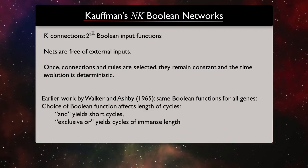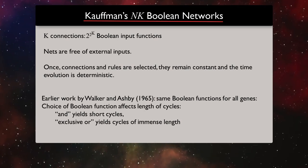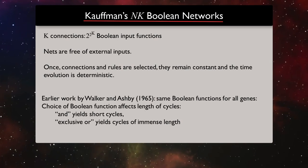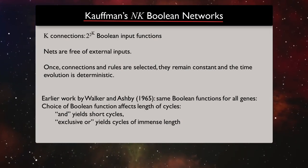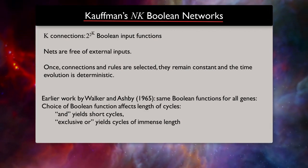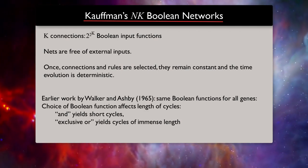If we use a boolean network as the model of organisms, then we can have a different network for every organism. And we can think about questions such as, what is the relationship between the average connectedness of the genes and the ability of organisms to evolve?